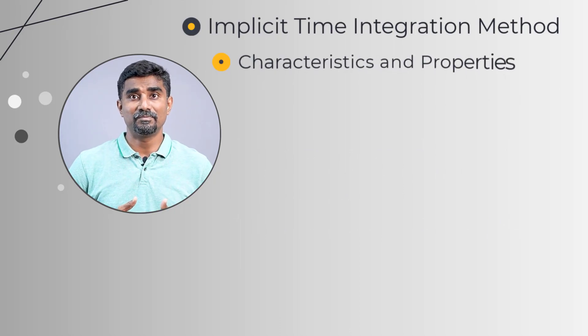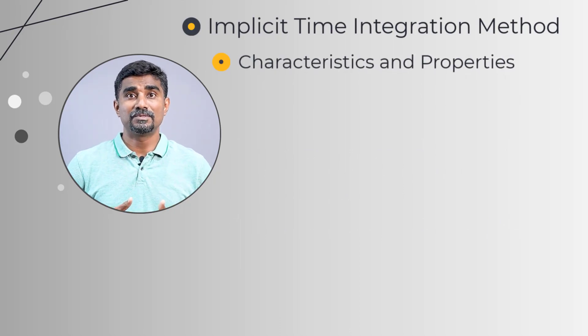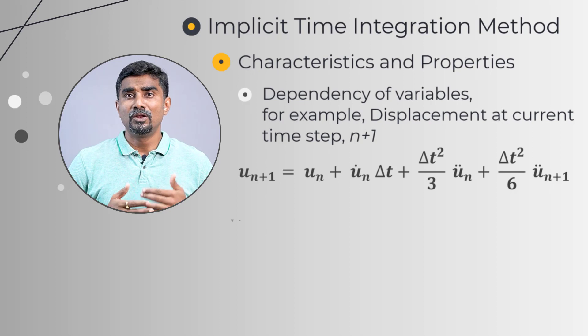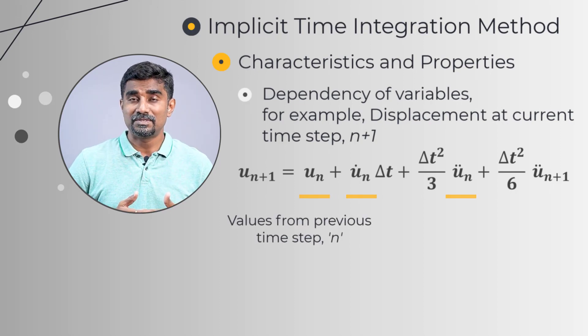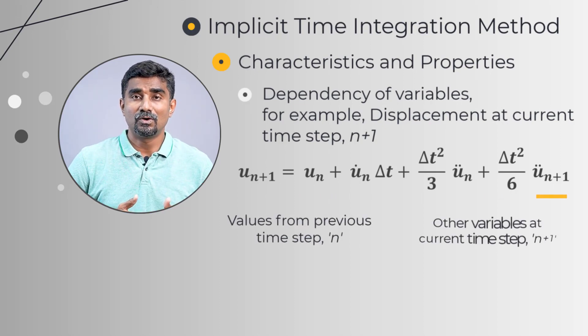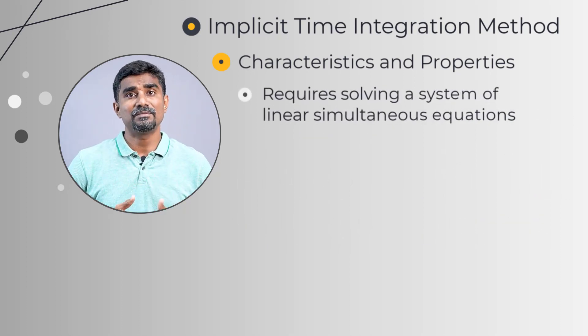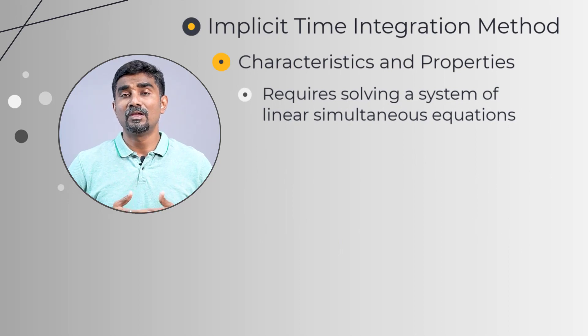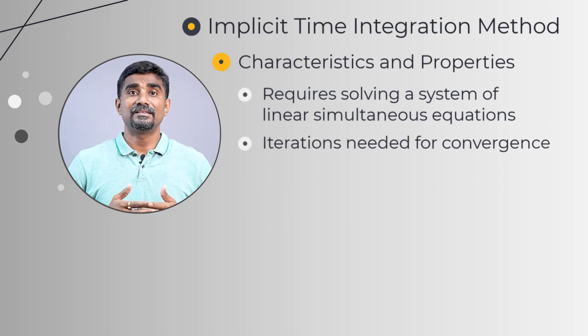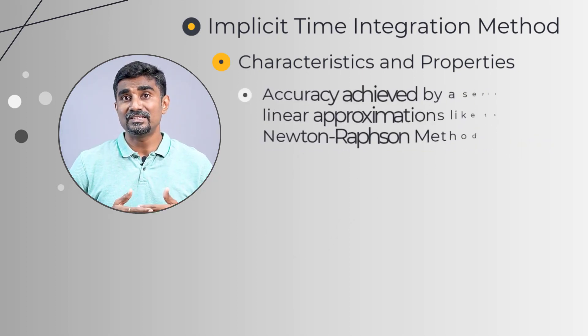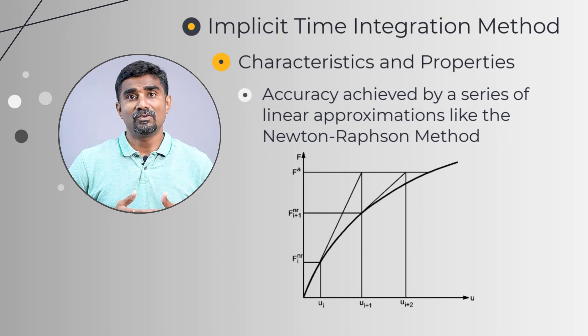The implicit time integration method for dynamic problems has certain characteristics and properties. The variables at the current time step depend not only on values from the previous time step, but also on the other variables at the current step. Hence, the implicit method requires solving a system of linear simultaneous equations. Iterations may be needed to achieve convergence and accuracy in each time step is achieved using a series of linear approximations like the Newton-Raphson method.